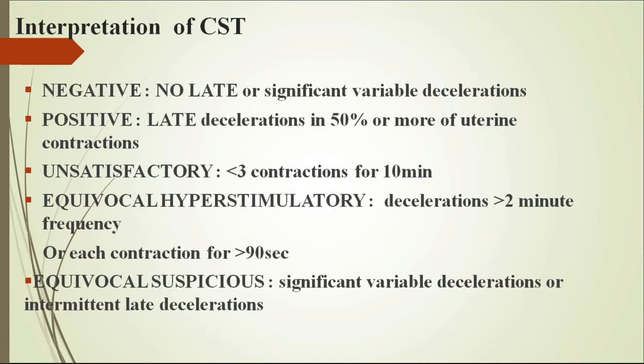Interpretation of the contraction stress test: if negative, there are no late or significant variable decelerations — early decelerations are physiological. If positive, late decelerations are seen in more than 50% of uterine contractions. If unsatisfactory, adequate contractions of three or more in 10 minutes cannot be induced with oxytocin, making interpretation unreliable.